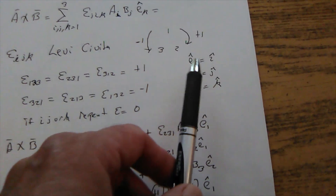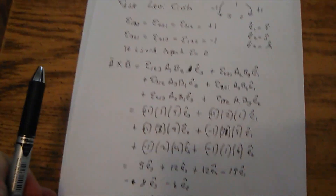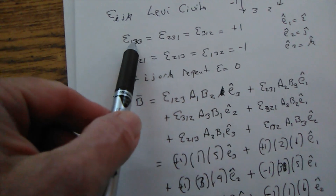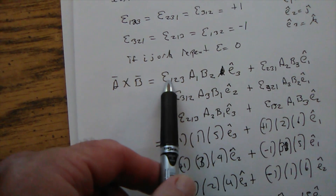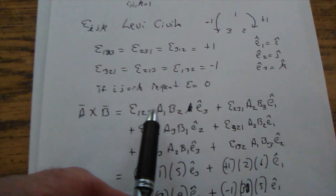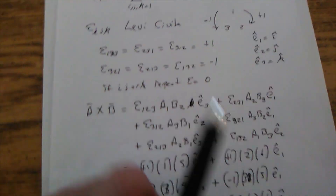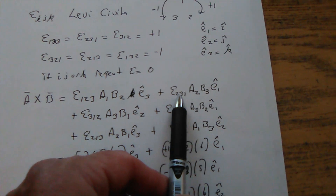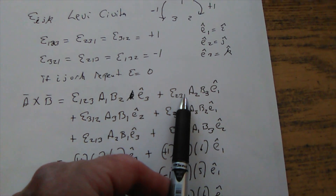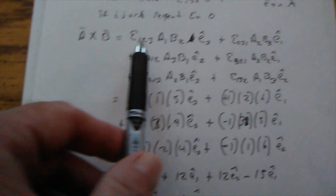Now they change i, j, k to e_1, e_2, e_3-hat. So to compute a×b, you write down the first one: epsilon_1,2,3 — that means you want the first component of a (a_1), the second component of b (b_2), and this is for the third unit vector e_3-hat. Then do the next one: epsilon_2,3,1 — so a_2, b_3, and this is for the first unit vector e_1-hat. You do all six terms.